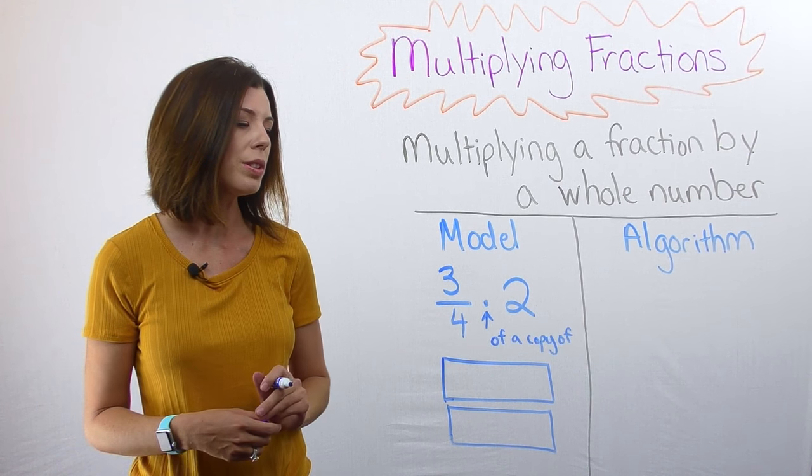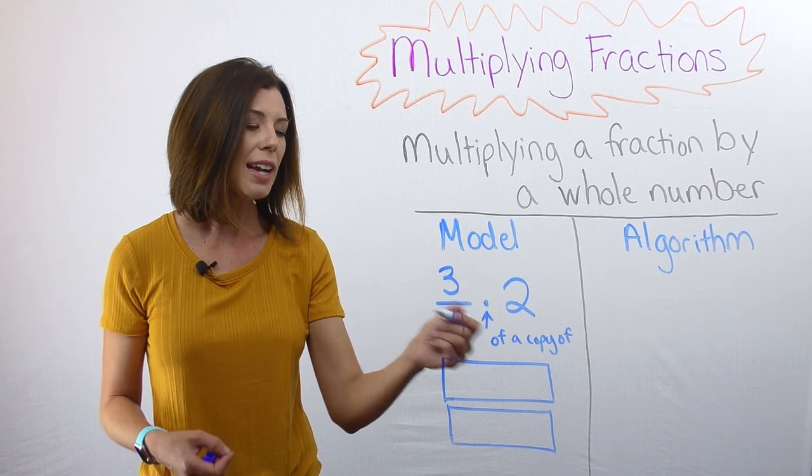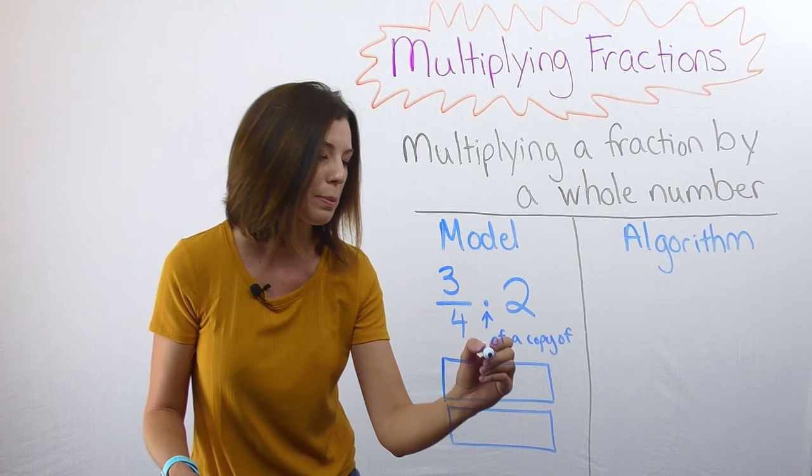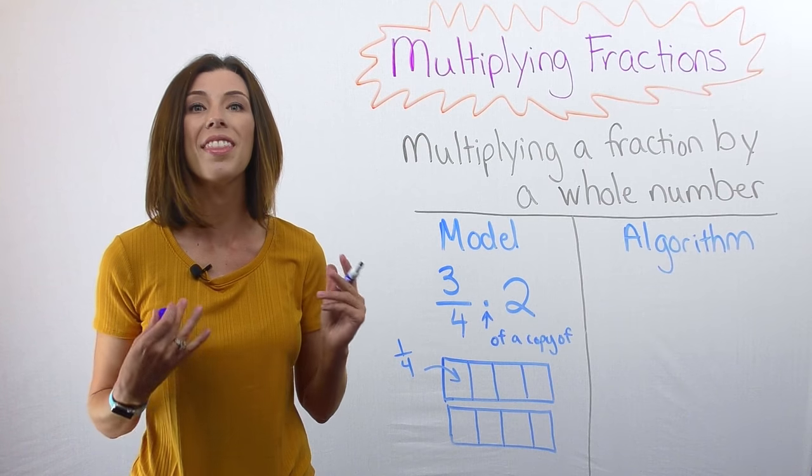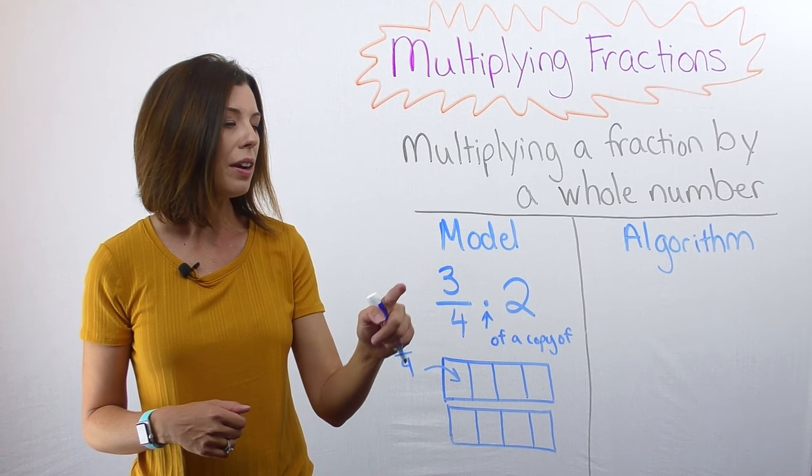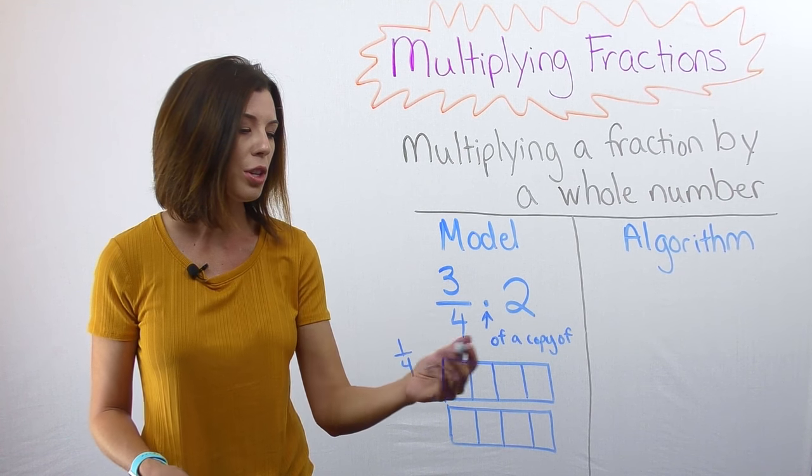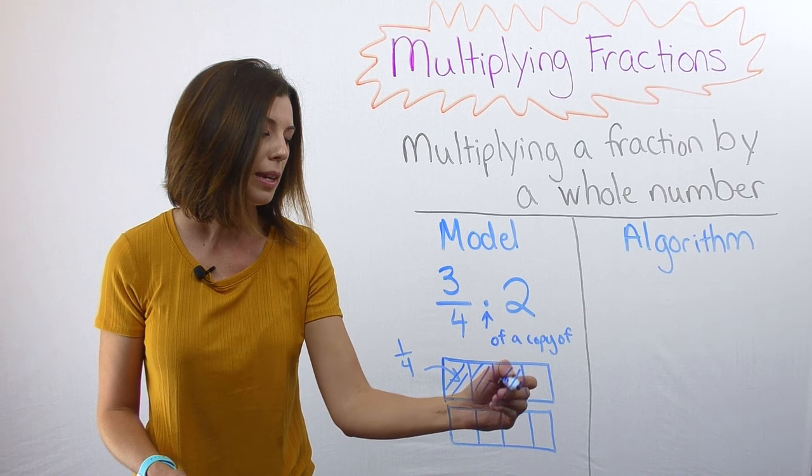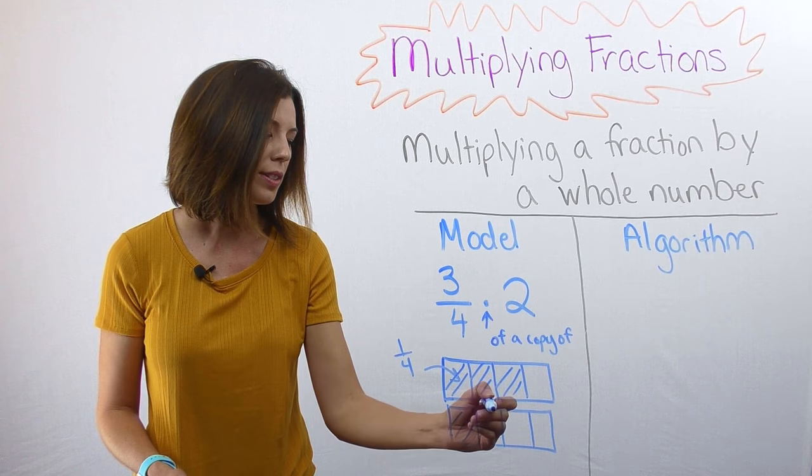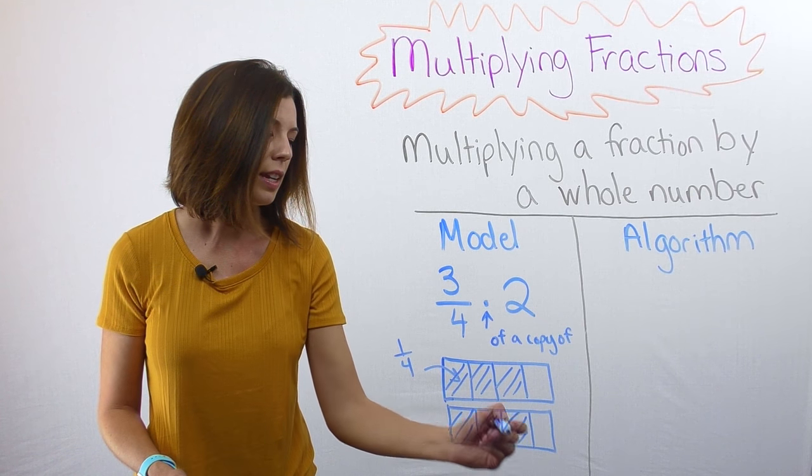All right, here are my two wholes, and I'm going to next cut them into four equal-sized pieces. Notice that this is called one-fourth. That is the name of it. So now I want three-fourths of a copy of two. Well, let's take three-fourths of this first copy and three-fourths of this second hole.